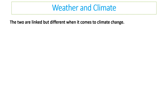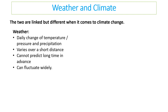The two factors, weather and climate, are linked when it comes to climate change, but we need to know the difference. Weather is a daily change of temperature, precipitation, and pressure — it might be sunny one day, wet the next. It varies over short distances; it might be raining in Bromsgrove but sunny in Worcestershire, less than 15 miles away. We can't predict it long term and it can fluctuate widely.